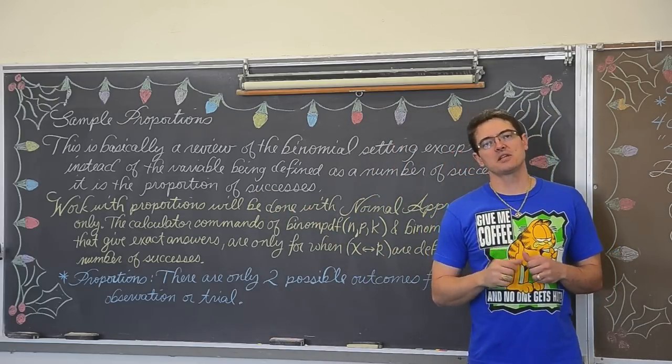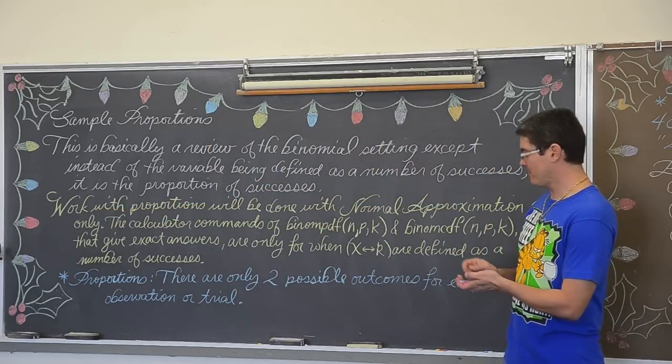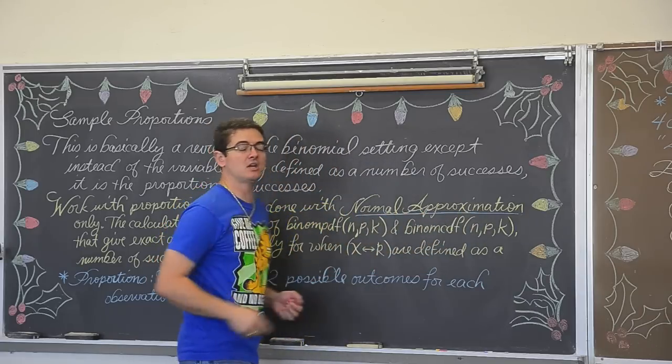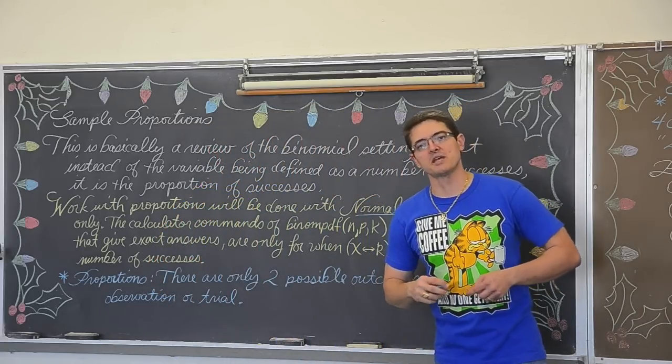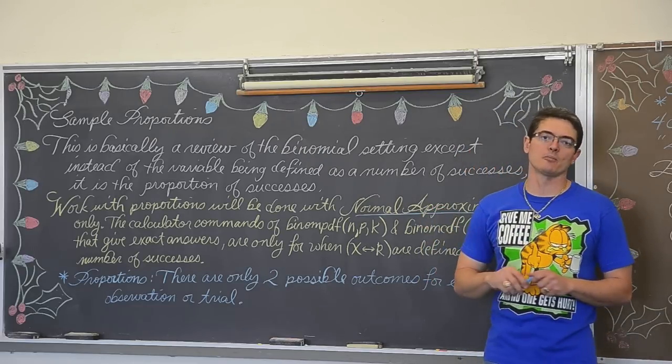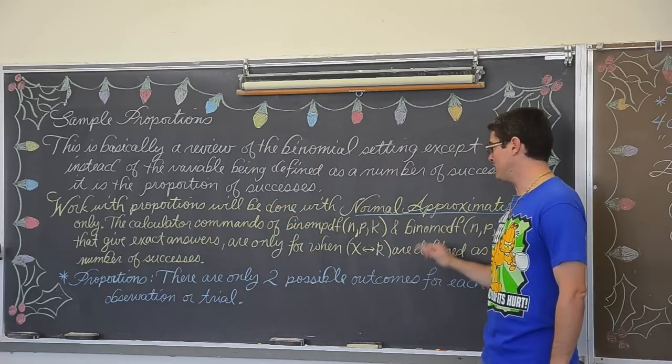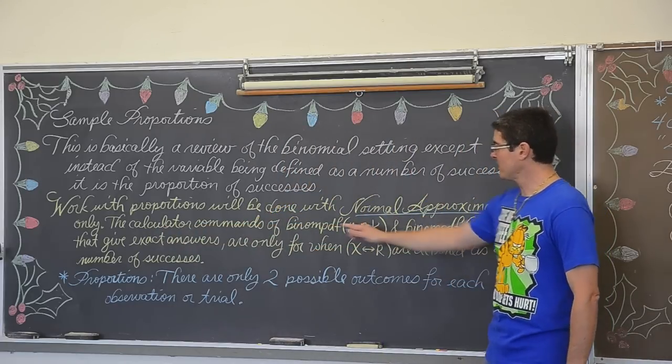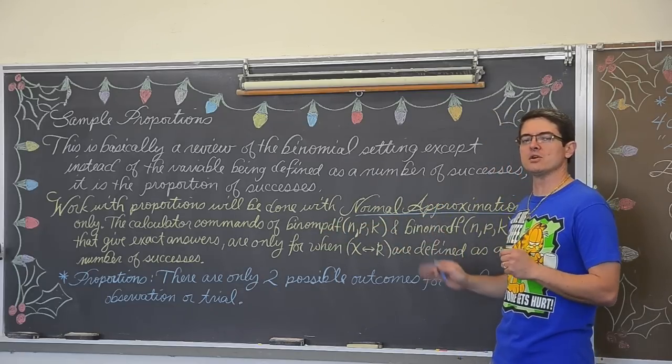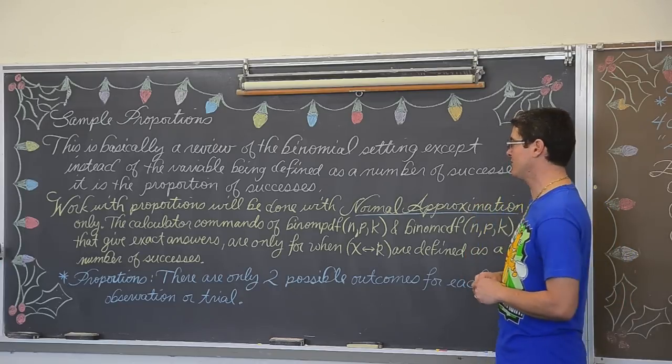Okay, well in the binomial count setting, a lot of times we use these commands. We are only going to be working with proportions when the work with those proportions are only going to be done using something called normal approximation. You did learn that when we talked about the binomial setting and binomial counts. The reason why all proportion work is going to be involving the normal approximation process, z-scores basically, is the calculator commands of binomial pdf and binomial cdf, those commands that gave us probabilities of one specific outcome or a cumulative series of outcomes, those only work when the x, the variable is defined as the number of successes, not the proportion of successes.